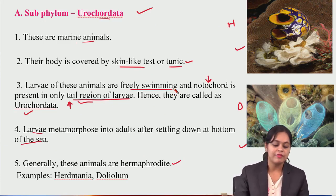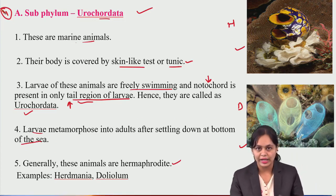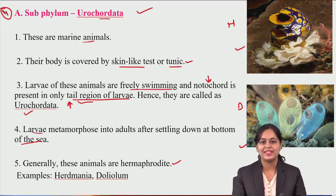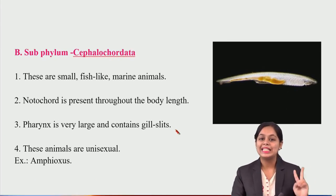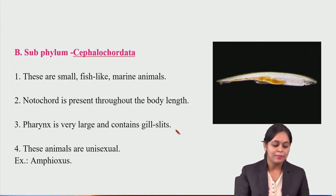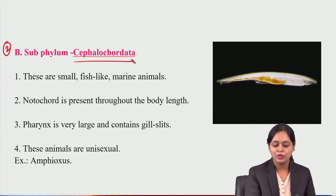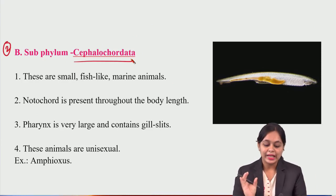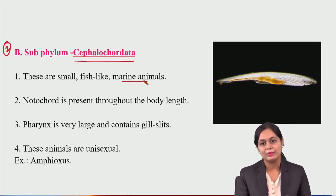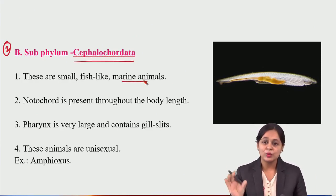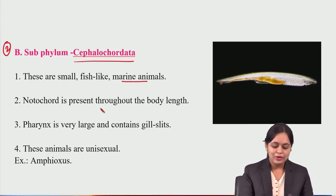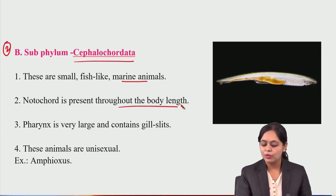Urochordata is the first subphylum of the chordates. Now coming to the second subphylum of the chordates, that is Cephalochordata. These are fish-like marine animals — they are not fish, but they resemble fish. They are found in ocean seas. Notochord is present throughout the entire body length.